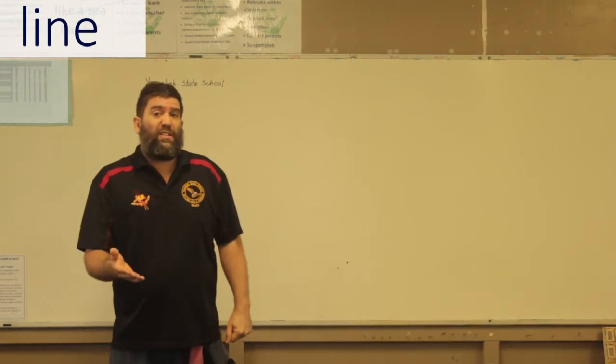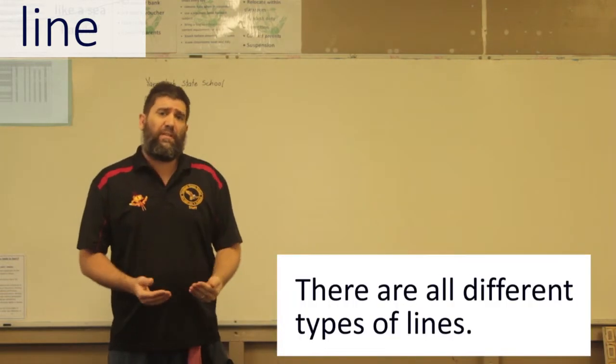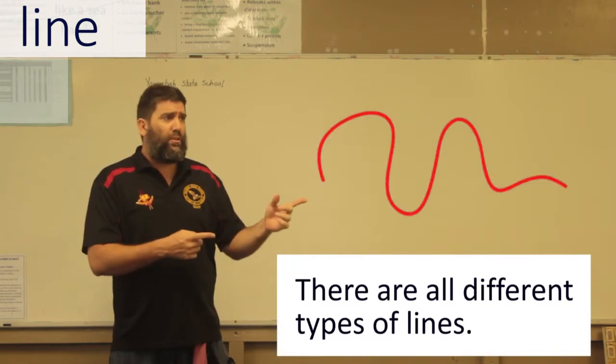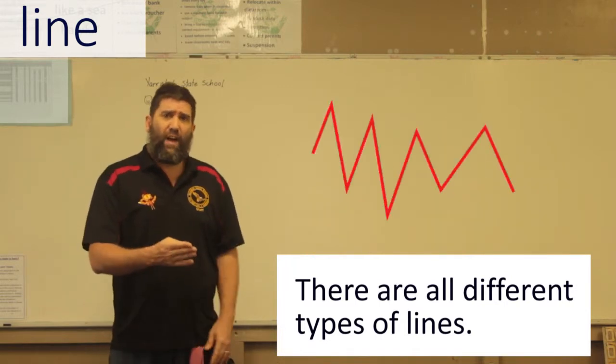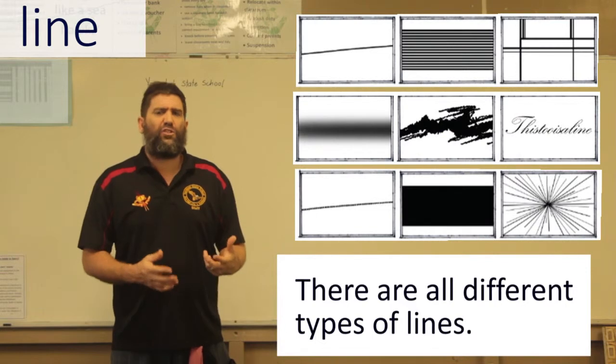Another thing to think about lines is lines can have lots of different appearances. They can be wavy and smooth, they can be jagged, scratchy. They can have all different sorts of lines.